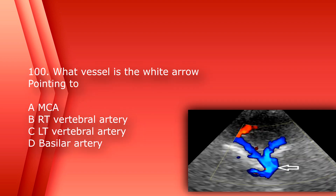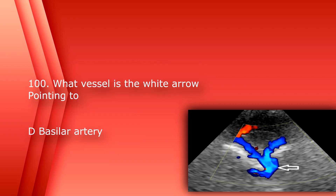Number 100: what vessel is the white arrow pointing to? A. Middle cerebral artery. B. Right vertebral artery. C. Left vertebral artery. Or D. Basilar artery. The answer is D. Basilar artery.